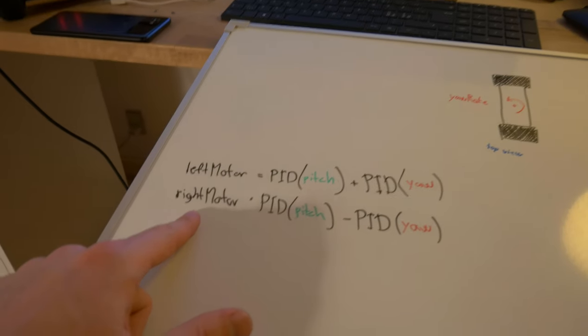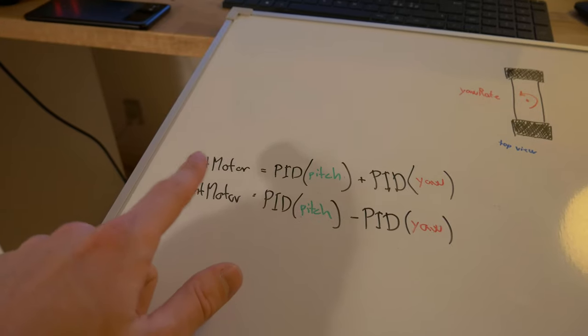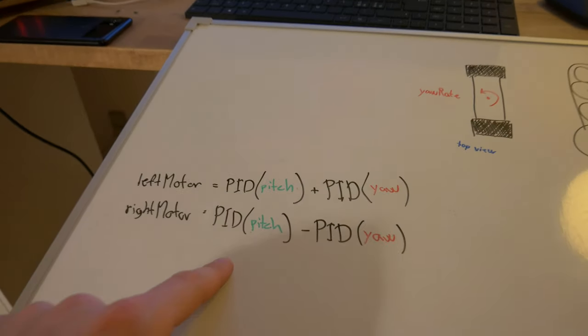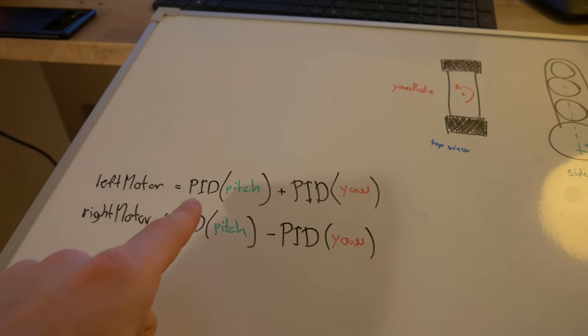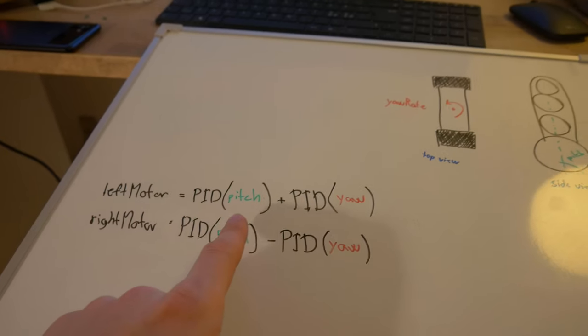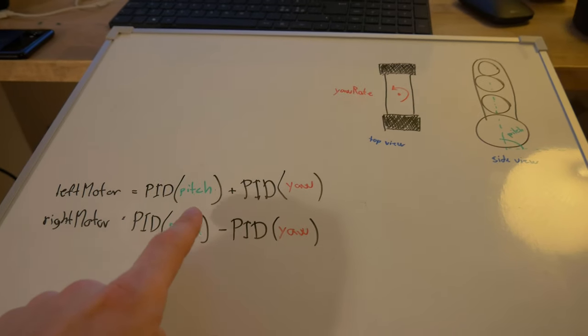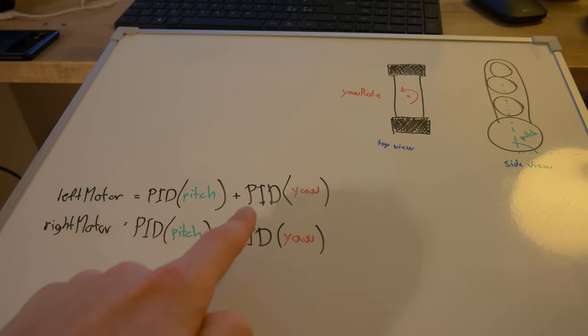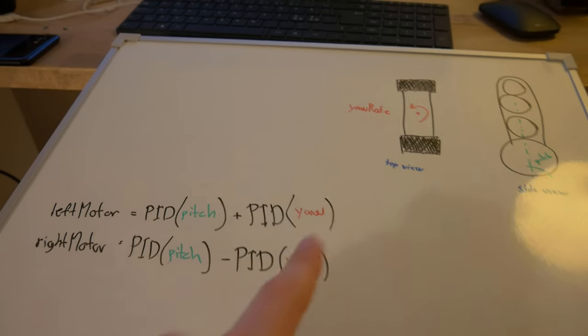The way it's done is by controlling the speed of the left and right motors. For the left motor, I'll run the PID loop for the pitch angle, and that's going to give me some motor speed. Then I'm also going to run the PID loop for the yaw rate.